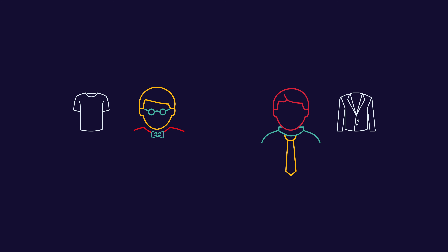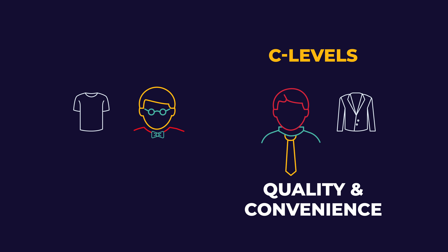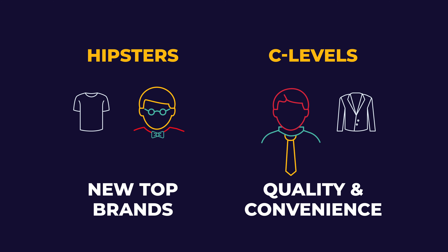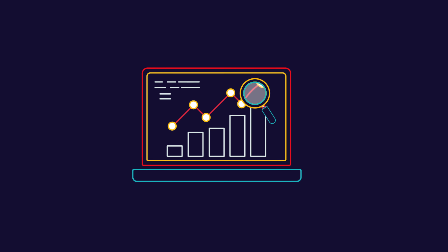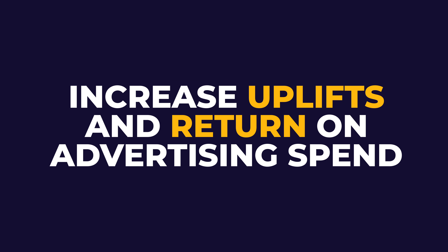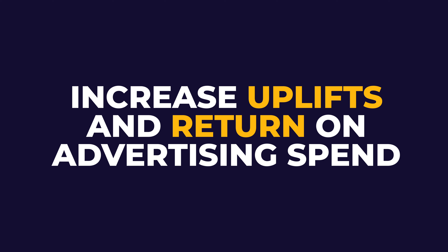For example, you might find two groups who buy clothes for work. One is composed of C-level corporate executives who seek quality and convenience of delivery. Another group is composed of hipsters who want to try new top brands. You just uncovered the unknown unknowns. By uncovering these data insights from the clustering model, you will probably increase your uplifts and return on advertising spend. Now you can use this information to create a lookalike audience on Facebook, Instagram, or Google Ads to reach out to similar users with awareness campaigns.